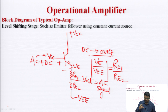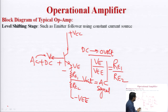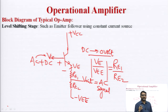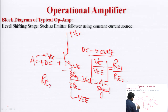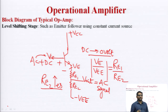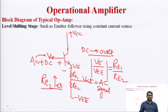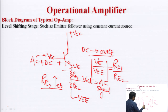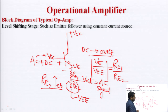The emitter follower also provides high input impedance to the operational amplifier. Since Re2 needs to be large for effective level shifting but high-value resistors are not available in integrated circuit form, Re2 is replaced with a current mirror circuit — a constant current source.